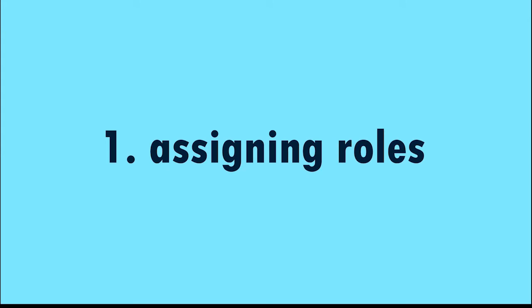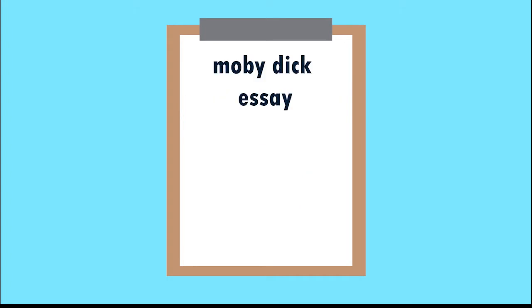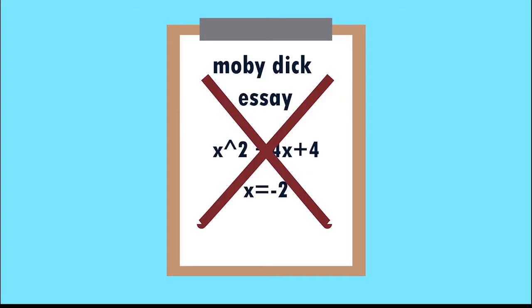The first thing we're going to be talking about is planning. There are 4 key items you need to consider. The first one is roles for all group members — who is responsible for what? You want to give out tasks to people that are good in that field. For example, you wouldn't want someone good at math writing your essay; you'd prefer someone good at writing to do that instead.